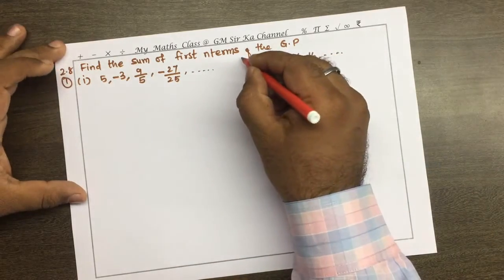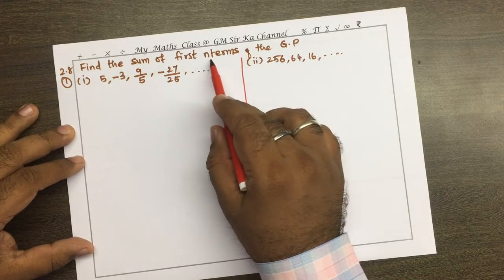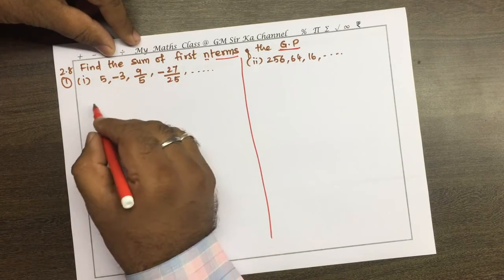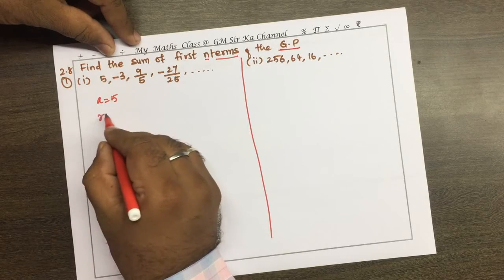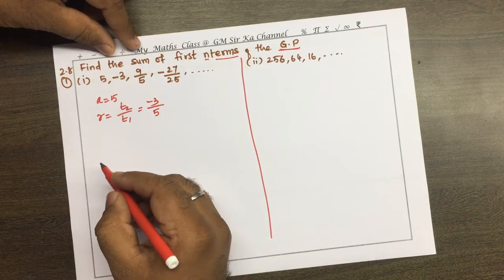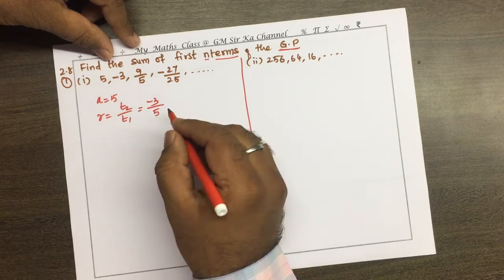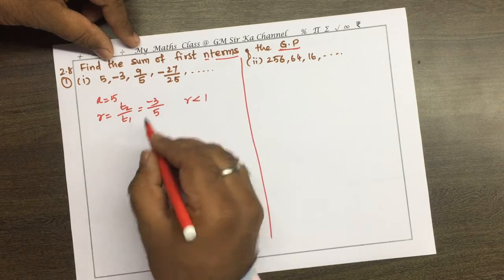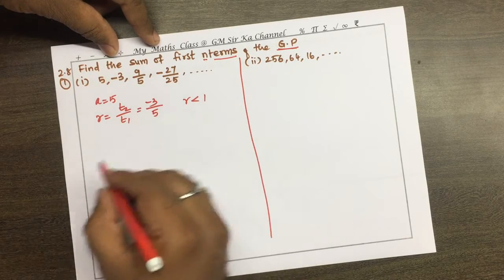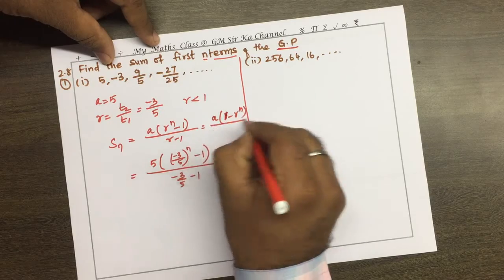The first problem: find the sum of the first n terms of the geometric progression. Here the first term a is equal to 5. The common ratio r equals t2/t1, which is −3/5, and since it is negative, r is less than 1. So we use the formula for when r is less than 1: Sn equals a(1 − r^n) / (1 − r).